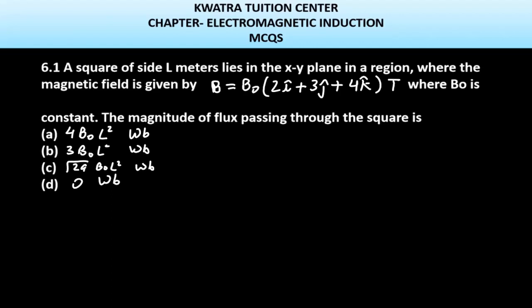Where is the magnetic field? The magnetic field is given as B = B₀(2î + 3ĵ + 4k̂) where B₀ is constant. The magnitude of flux passing through the square is what we need to find.